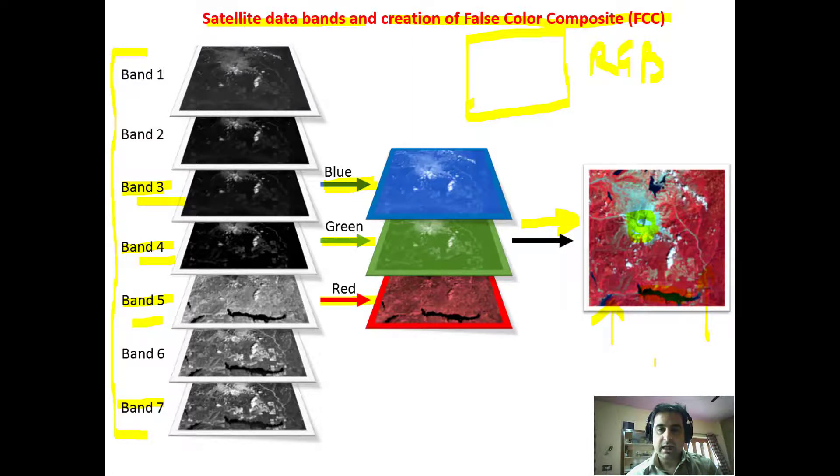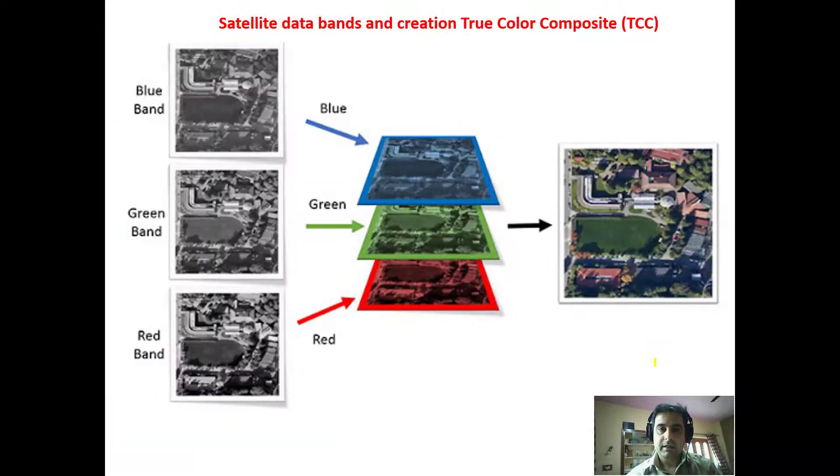These are not the actual colors which you actually see in the real world, so this is a false color composite. Now talking about true color composite - you choose three bands and the wavelengths pertaining to these three bands is that this band pertains to blue band, this band pertains to green wavelength.